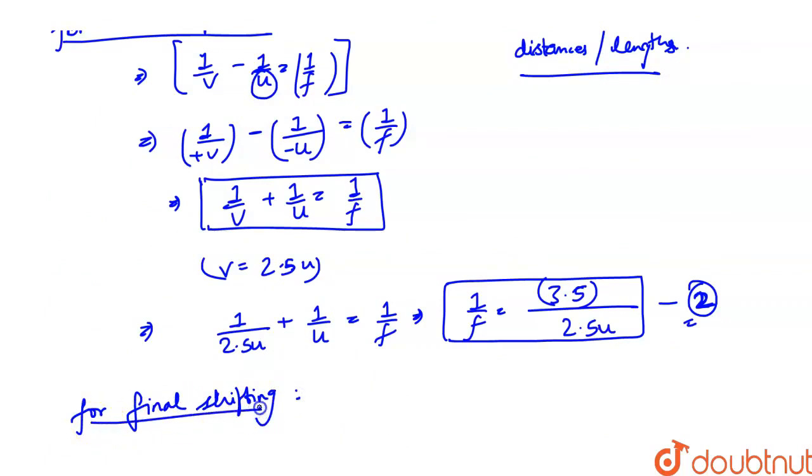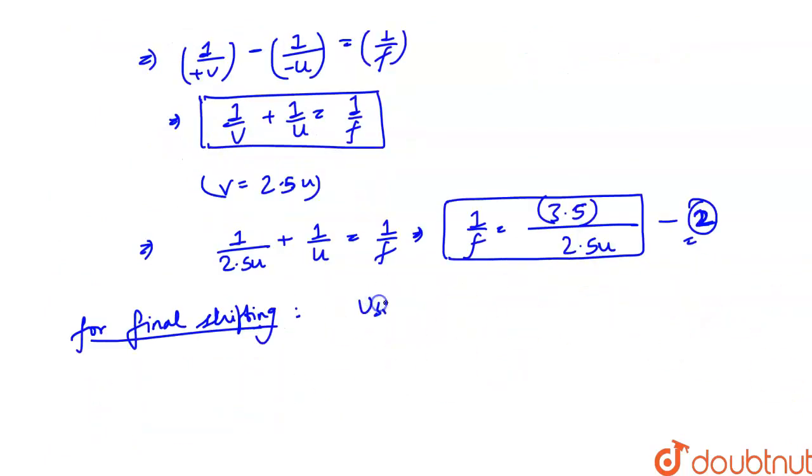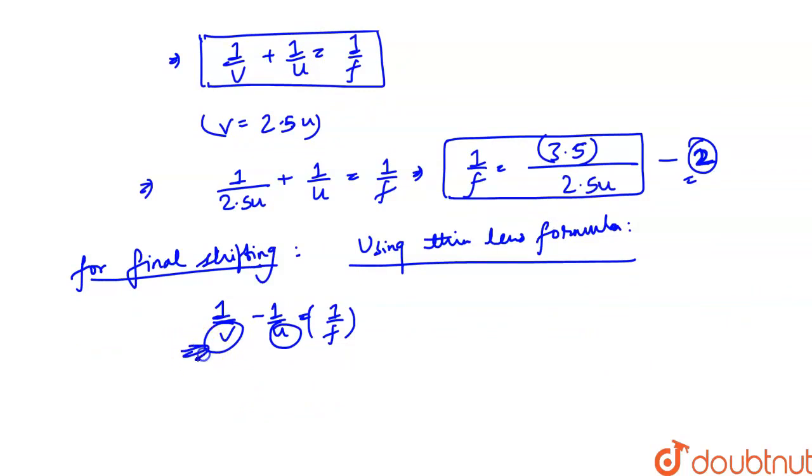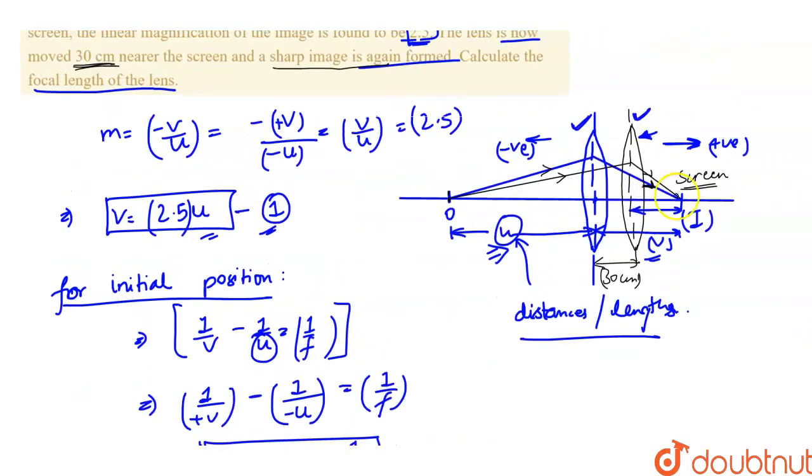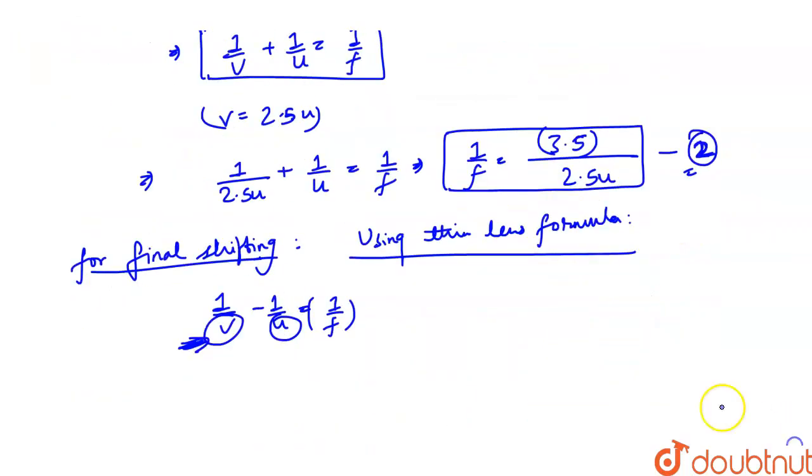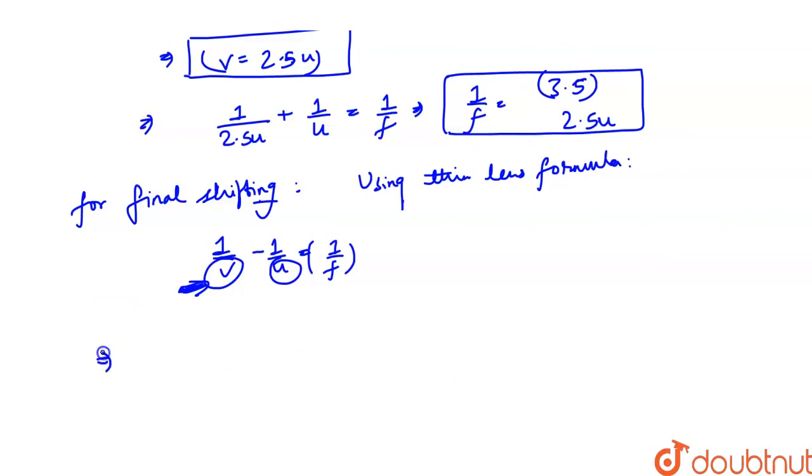After shifting, we are using the thin lens formula. 1 upon v minus 1 upon u equals 1 upon f. This is just sign with distance. Now the final distance—this is the second case. The image distance from the lens is v minus 30 on the right side, so this will be positive.